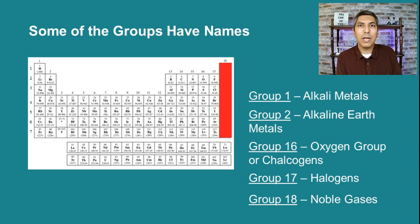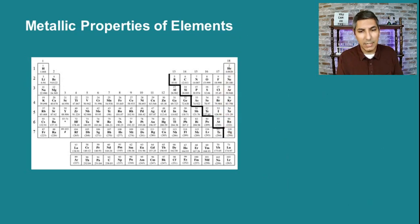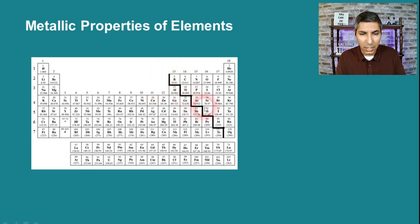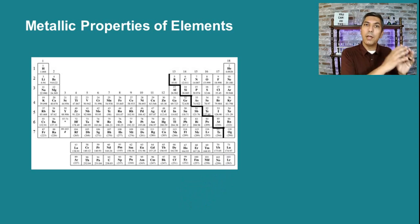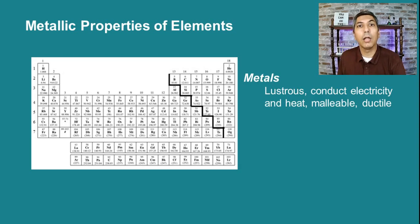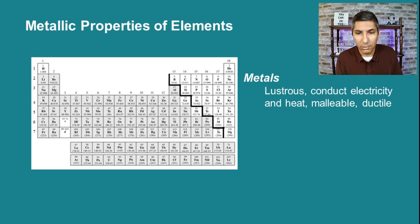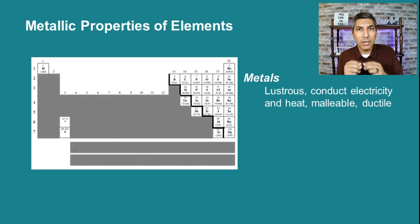Those are five important groups whose names you probably need to know. Another way to classify elements is by their metallic properties. On the periodic table there is a stair-step line drawn toward the right side of the table — that line separates the metals from the non-metals. Metals are lustrous, meaning they're shiny like a mirror. They're good conductors of electricity and heat. They're malleable, meaning we can hammer them into a sheet like aluminum foil. They're ductile, meaning we can stretch them into a wire like copper or gold wire.